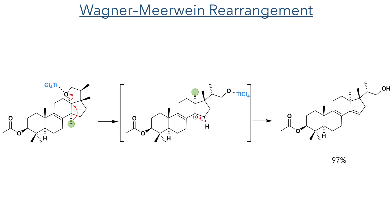Taking this compound forward, another Wagner-Mierwein rearrangement was carried out, this time promoted by titanium tetrachloride. This coordinates to the ether, making it a good leaving group, allowing for the 1,2-methyl shift to occur and producing the second quaternary stereocenter. The carbocation produced by this rearrangement causes an elimination reaction, forming a new alkene in a 97% yield.